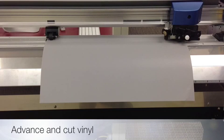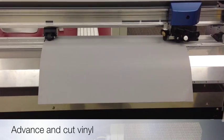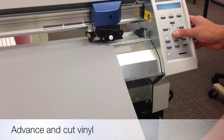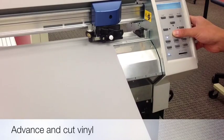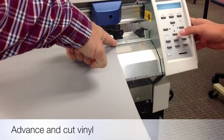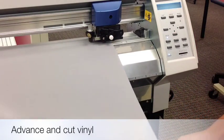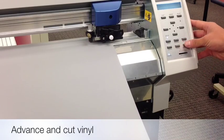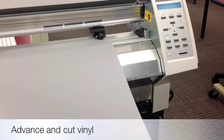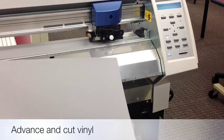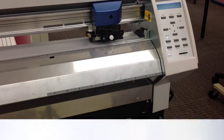Once your design has finished cutting, you will need to advance the vinyl out of the machine and cut it off so that we can weed it. To advance it, you're going to push the down arrow button, advancing the vinyl out of the machine until the design passes just past the cutting slot. Then you're going to push and hold the sheet cut button for about two seconds. The carriage will cut the vinyl off, and then you'll be ready to weed it.